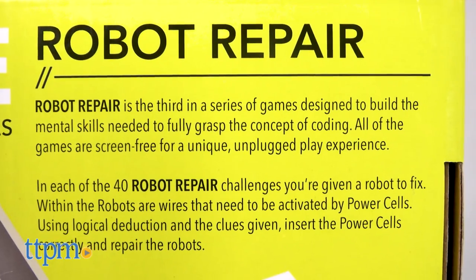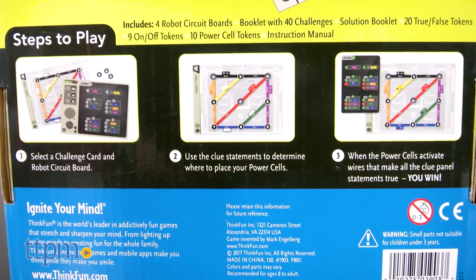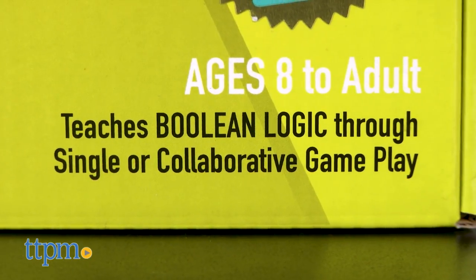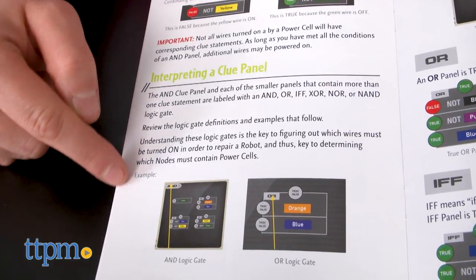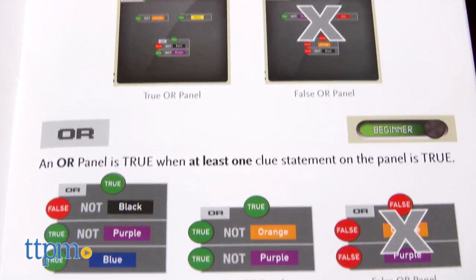Robot Repair is the third board game in this set of three, and it is the most complex and challenging. This board game's objective, apart from being fun, is to teach Boolean logic, a form of algebra that centers around true and false values. It's a core computing concept.